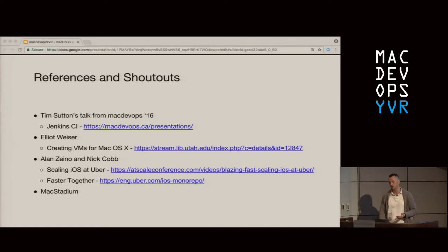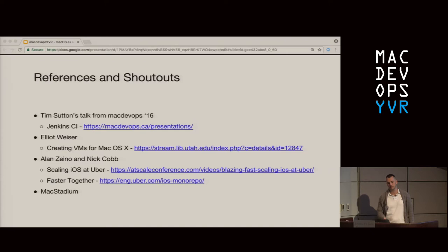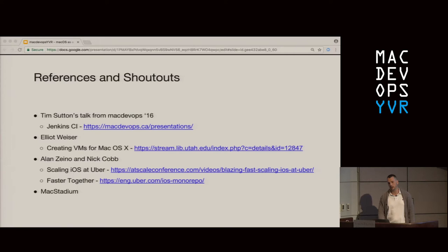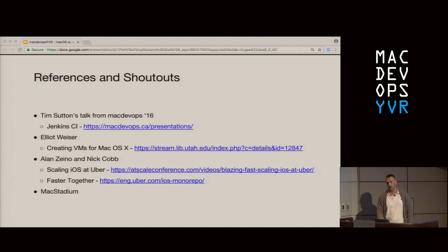We'd like to include a brief references and shout-out slide for anyone getting started with the concept of CI. There's some great content out there, and we hope this talk helps build on those concepts. Many of you know Tim Sutton, who gave a talk last year at Mac DevOps on using Jenkins for automation, and Elliot Weiser, who talked earlier this year about immutable architecture and creating macOS VMs during the Utah Mac Managers Meetup. This talk also builds on a previous talk we gave during Facebook's AtScale conference last August. And we'd like to give a brief shout-out to Mac Stadium — Greg, Jason, and the rest of the team have been supporting the fairly ridiculous size of this deployment with a really helpful, willing, and curious attitude.